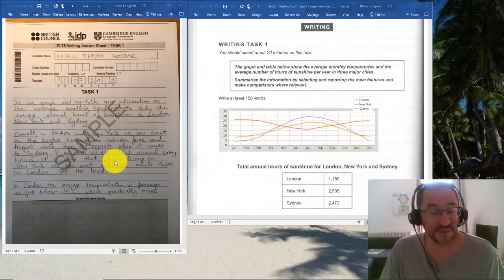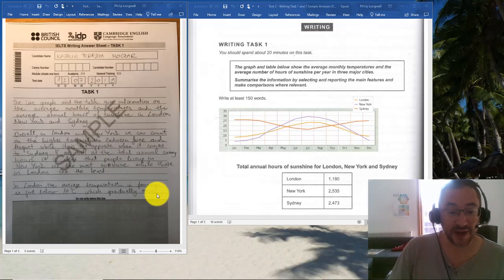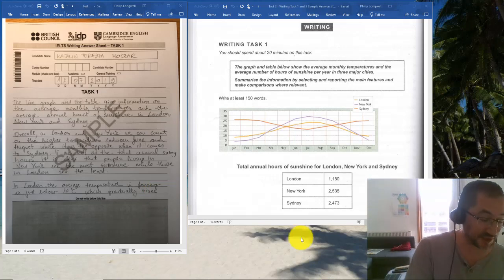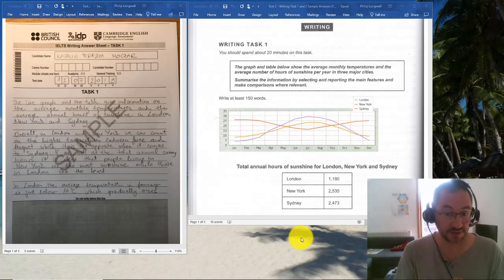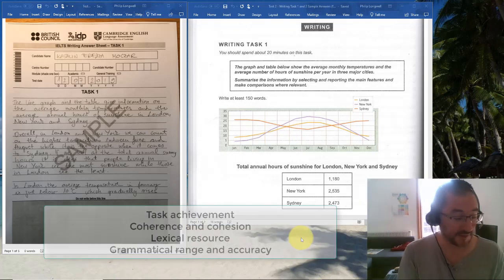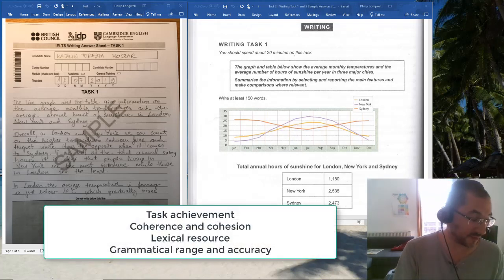Because that's what you get in the exam and it's also good for me to see your handwriting, which needs to be legible and able to be read by the person marking. Just a reminder before we go into your answer: there are four criteria and they are equally weighted.